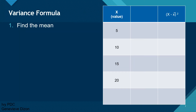Let's now compute for the variance. The formula is the average of the squared differences from the mean, and we have several steps to follow. First, we find the mean by adding all the values. Using simple values — 5, 10, 15, and 20 — when we add them up and divide by how many numbers there are, we get the mean. All of these numbers added and divided by 4 gives us 12.5, which is our mean.